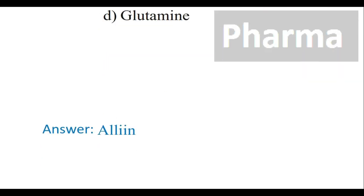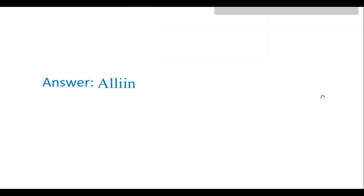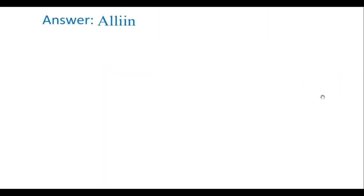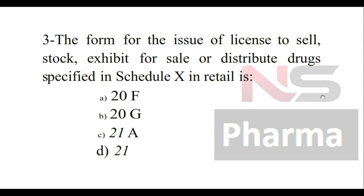Second question: A sulfur-containing amino acid is — Option A: Ornithine, Option B: Asparagine, Option C: Alanine, Option D: Glutamine. The answer is Alanine.